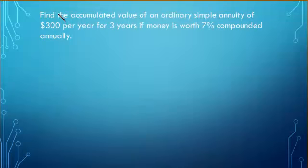Let's look now at a very similar problem. Here we have to find the accumulated value of an ordinary, simple annuity of $300 per year for 3 years. Now this is very similar to the problem we did just now. The only difference is that instead of paying $1 per year, you are now paying $3 per year.